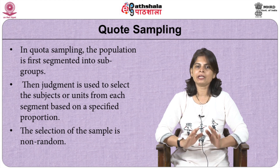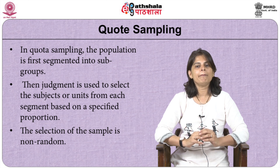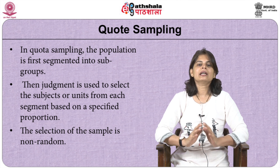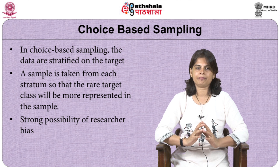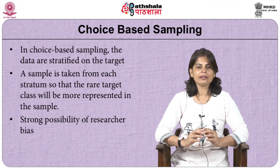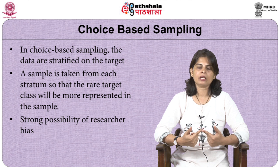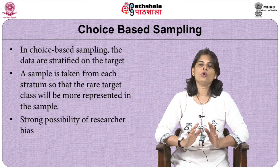Let us now come to non-probability sampling, the first of which is quota sampling. In quota sampling, the population is first segmented into subgroups, and then judgment is used to select subjects from each segment based on a specified proportion. Since selection is based on judgment, it is clearly a non-random technique. In choice-based sampling, data are stratified based on a particular target, and a sample is taken from each stratum so that the rare target class gets more chance of being represented. There is a strong possibility of researcher bias being introduced, so the sample is no longer random.